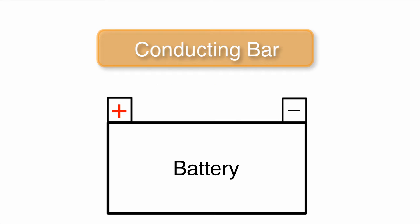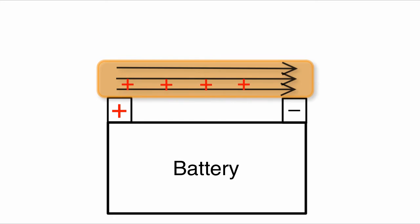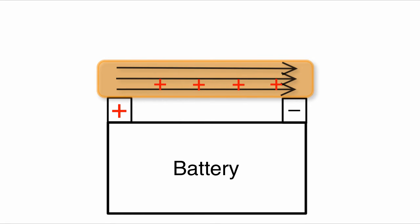If a conductor is not in electrostatic equilibrium, there very well may be an electric field within the substance of a conductor. For example, if I take a conducting bar and connect it to a battery, then there will be an electric field within the substance of the conductor and there will be charges moving within that conductor. There is a net motion of charge within this conductor, hence it is not in electrostatic equilibrium, and hence there can be an electric field within it.